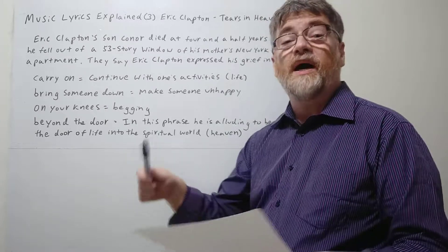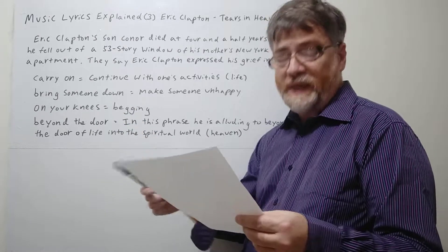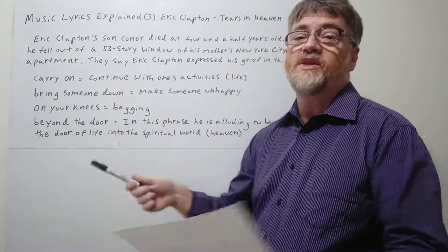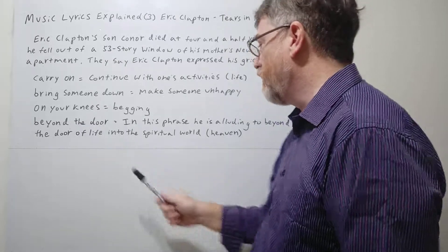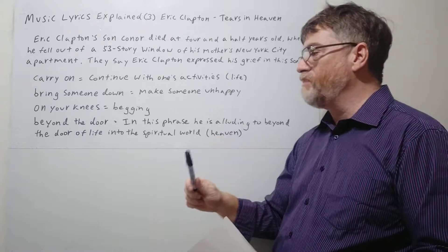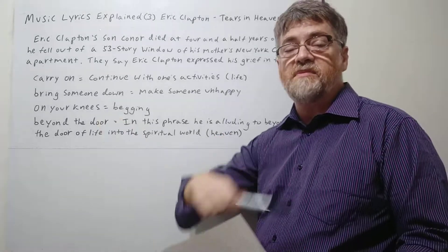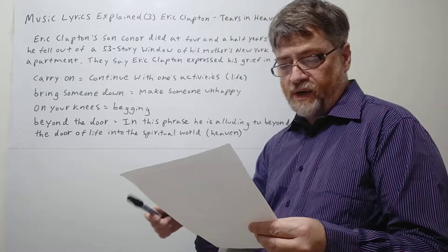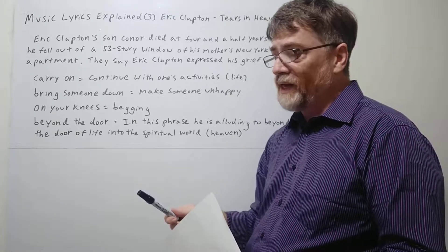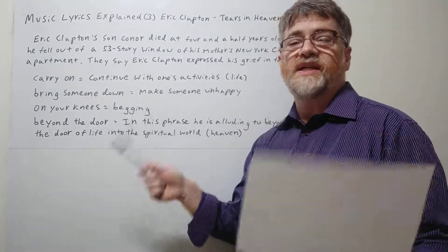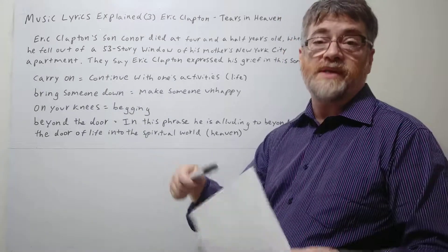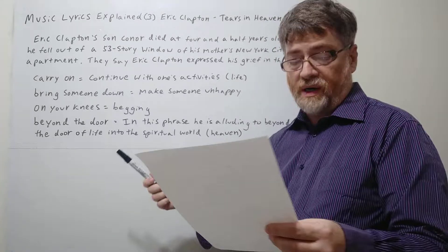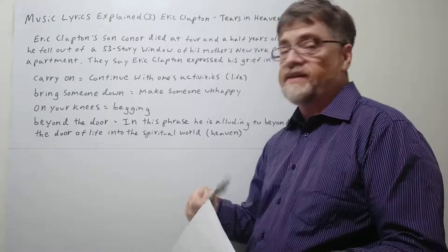And then he goes on to say beyond the door there's peace I'm sure and I know there'll be no more tears in heaven. So this is where the title comes from. Now of course when he says beyond the door in this phrase he is alluding to beyond the door of life. You know after he dies maybe going into the spiritual world or going into heaven. Beyond the door there's peace I'm sure. Well he's hoping that at least the pain of his son's death will have ended by that time. Because maybe he can see his son again. That's what he's hoping. And I know there'll be no more tears in heaven. Because maybe on earth he's still having tears.